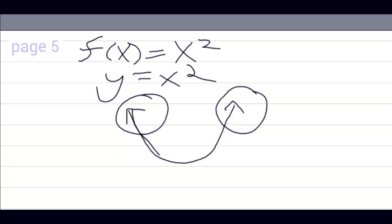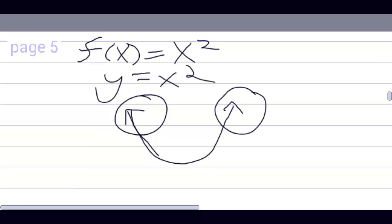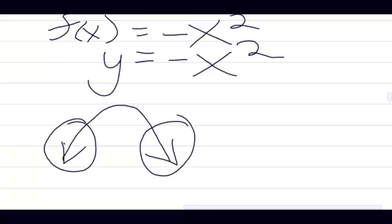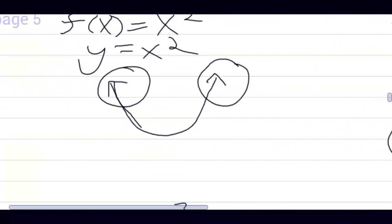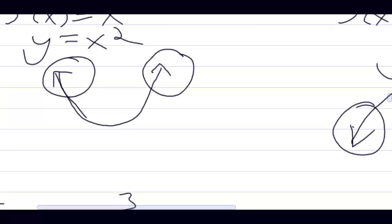All even functions — that is, all functions where x is raised to an even power — will have the same end behavior. Going up on the ends if the highest power is an even number and the first term is positive, or going down forever if the highest power is even and the leading term is negative. This will help you know what a function's graph is doing beyond where you can see it.